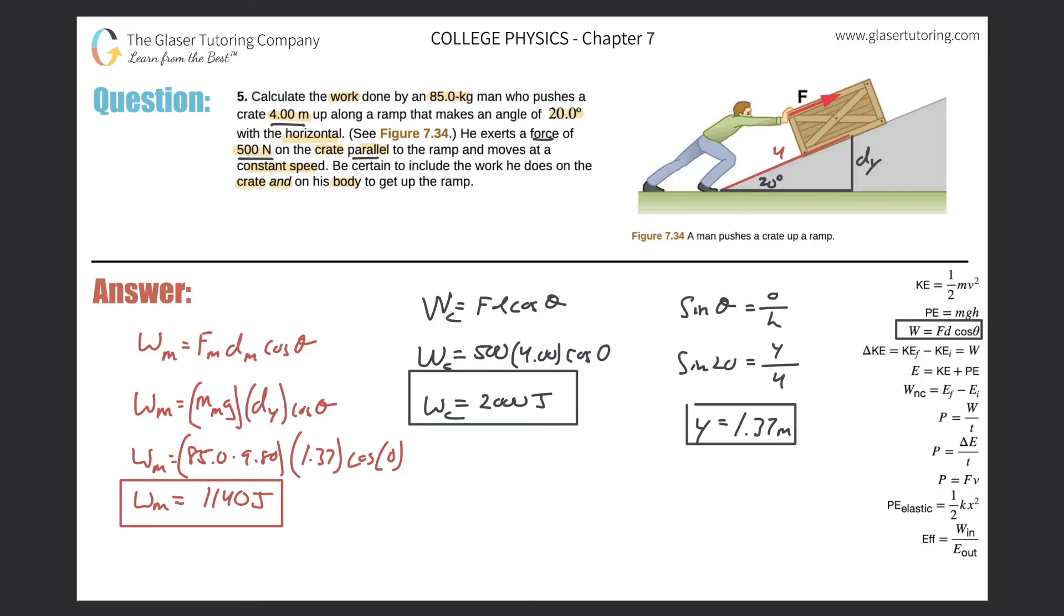We got the work done on the crate, the work done on the man himself just to get him up the incline four meters. Now if we have to find the total amount of work that he does, not only bringing himself up against gravity but also to push this crate, we're just going to add them together.